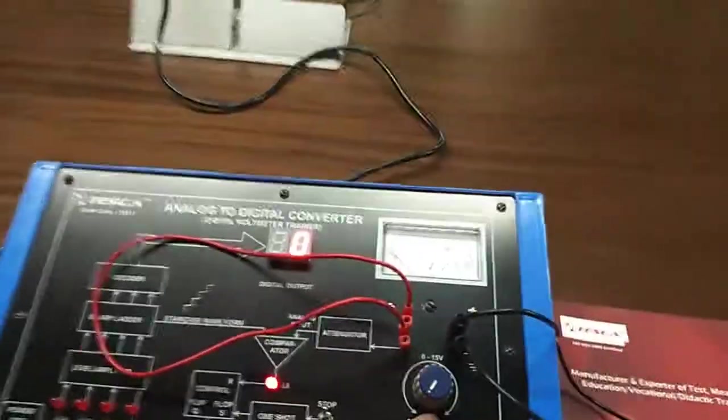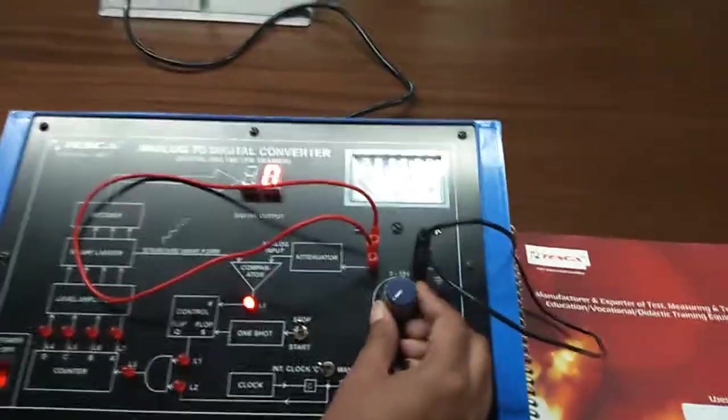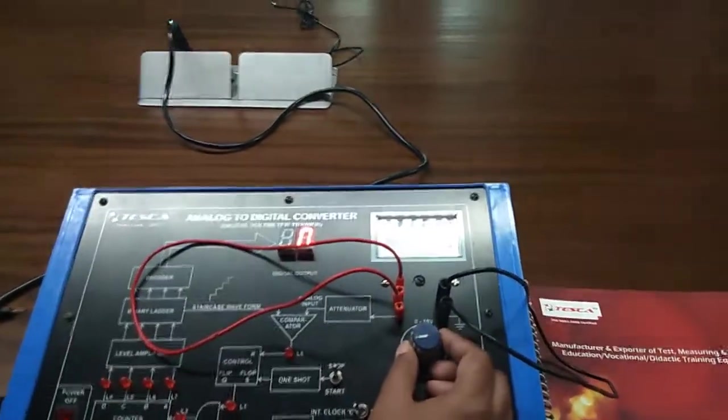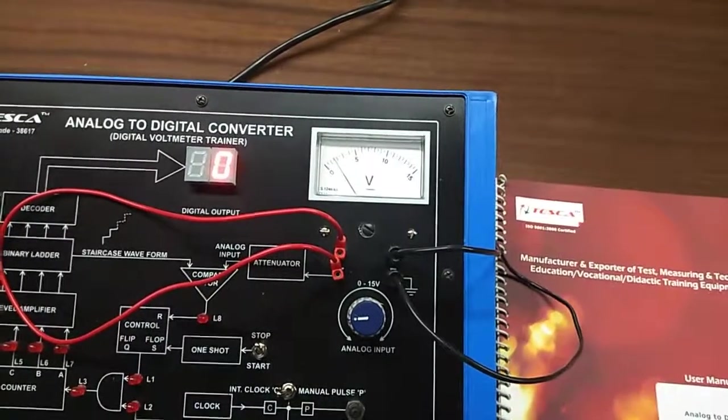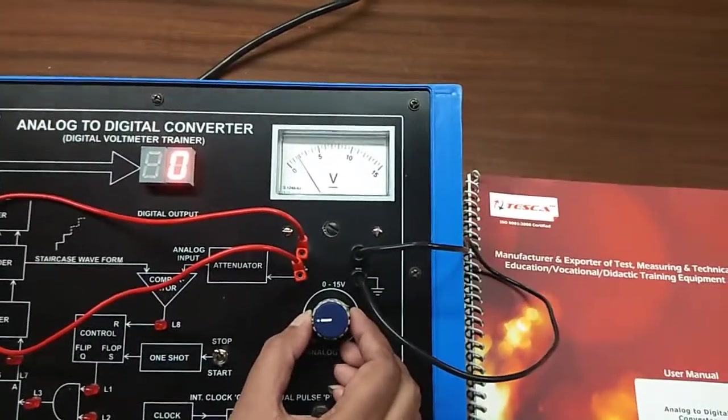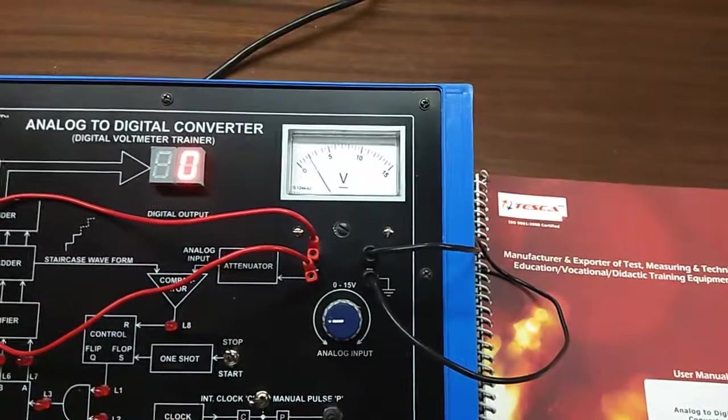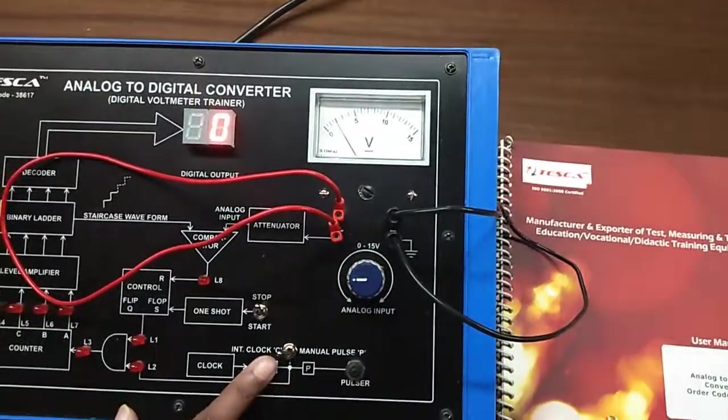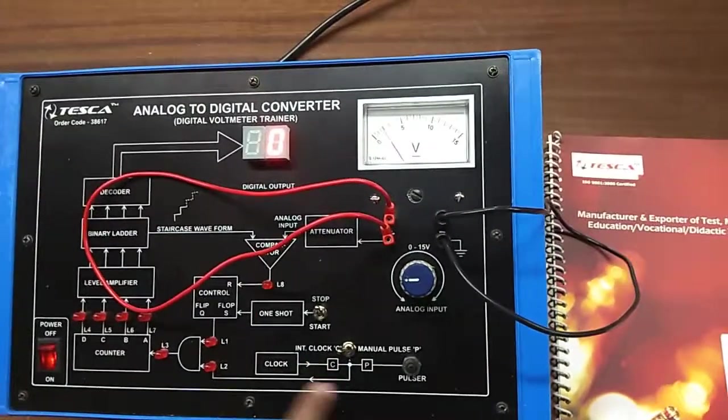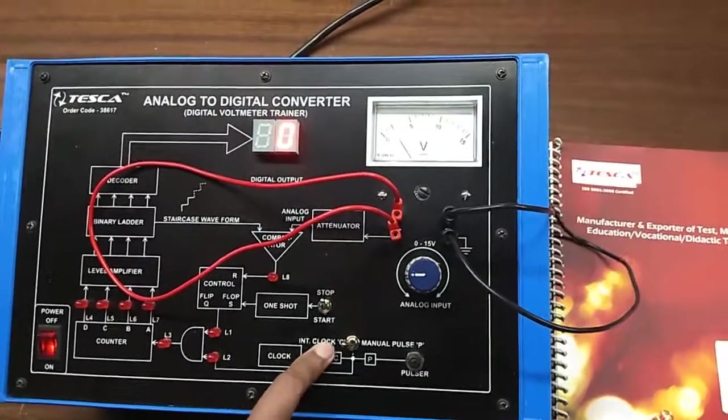Now give analog input with the help of this. I am setting it here. When this switch is in C position, the counter will automatically start to count.